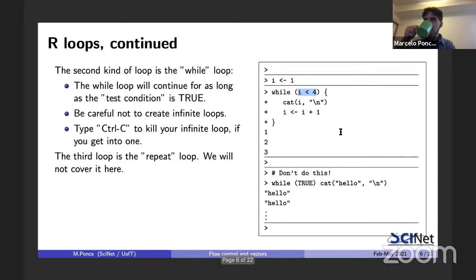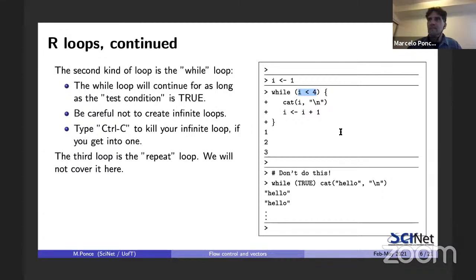So we saw two different looping types. The for loop is used when you have a concrete number of iterations — you loop over elements in a set. The while loop repeats a code block until a given condition is no longer satisfied. There is also a third way called repeat, but it's not very useful — the for and while loops cover most cases.